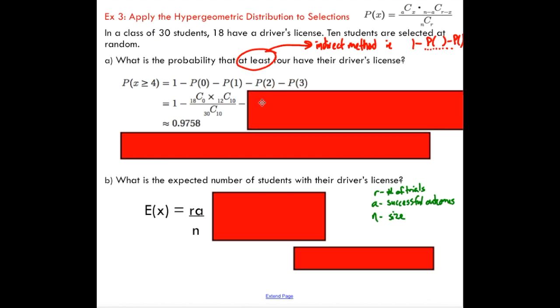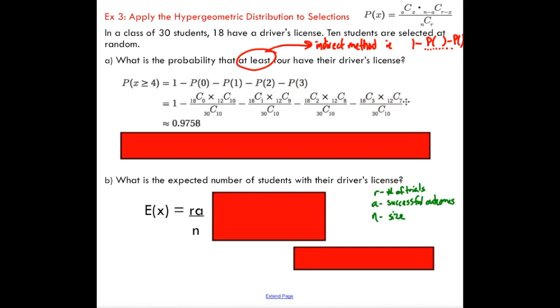We're going to subtract the probability of one, which you can extrapolate based on what we just did. We're going to choose one student to have their license, which means we're going to have one less student that does have their license. We can continue in a similar manner. Take a minute, pause the video if you have to process that.